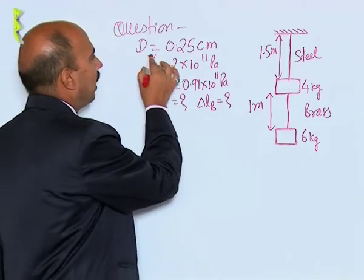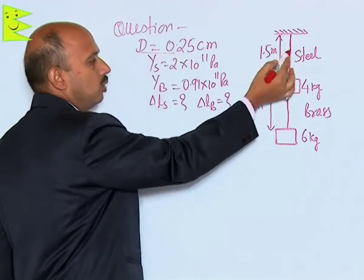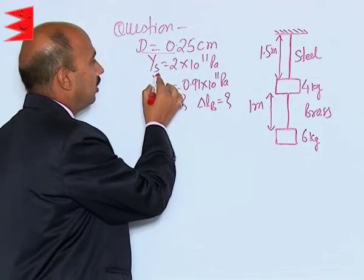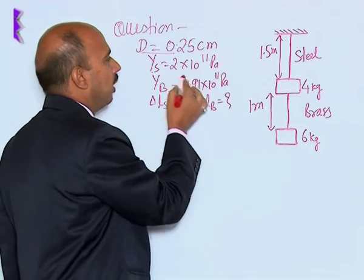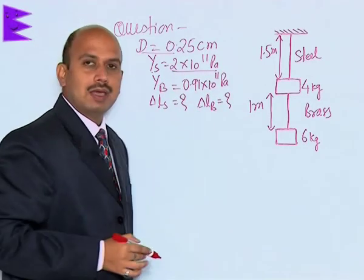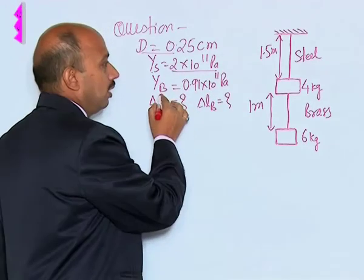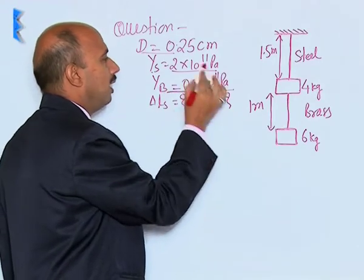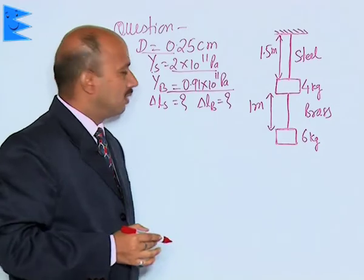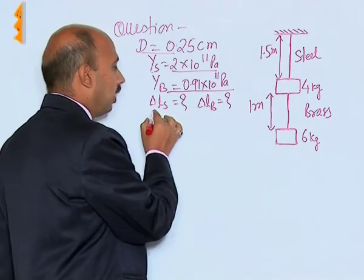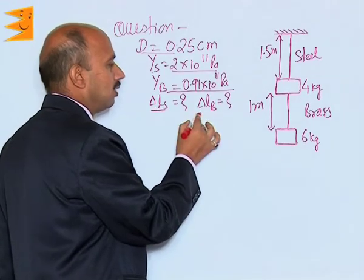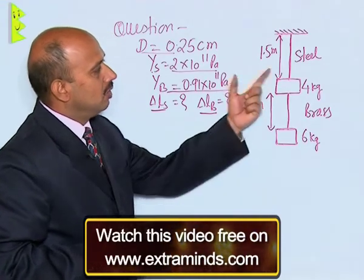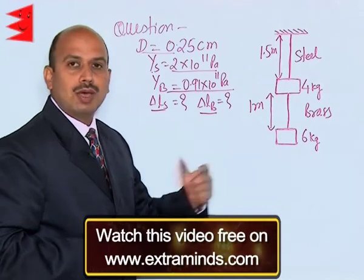The diameter of both wires is 0.25 centimeters. Young's modulus of the steel wire is 2×10^11 Pascal, and for the brass wire it is 0.9×10^11 Pascal. You have to calculate ΔLs and ΔLb - the elongation in the steel wire and in the brass wire.